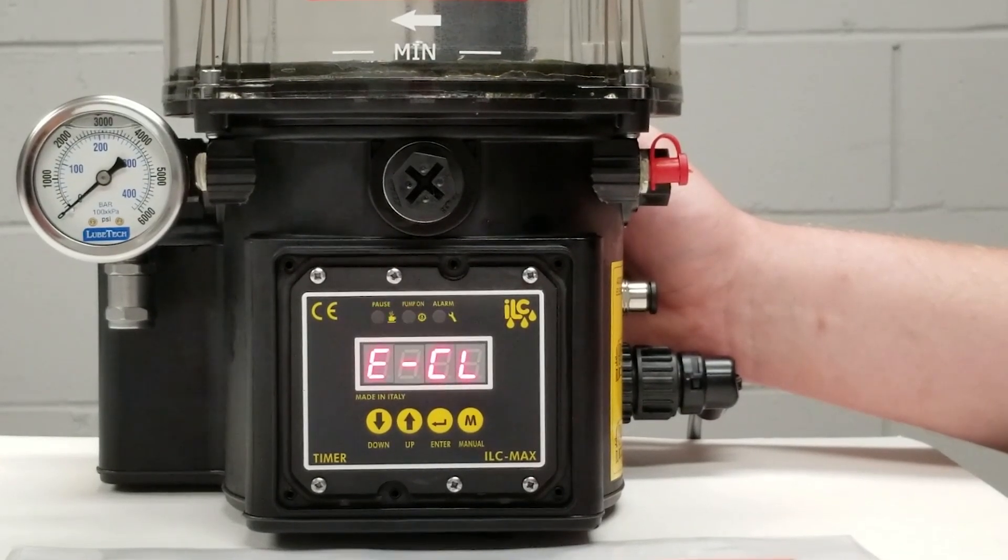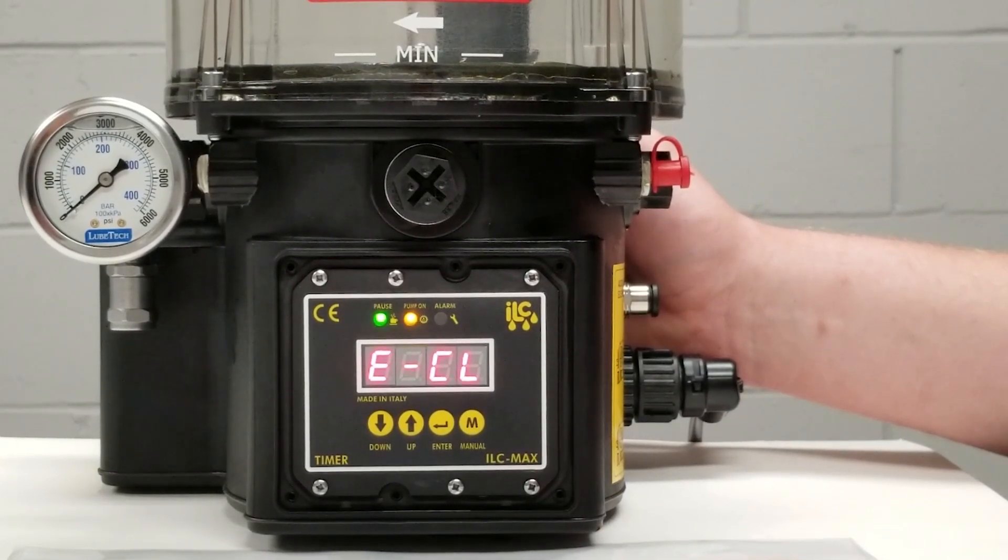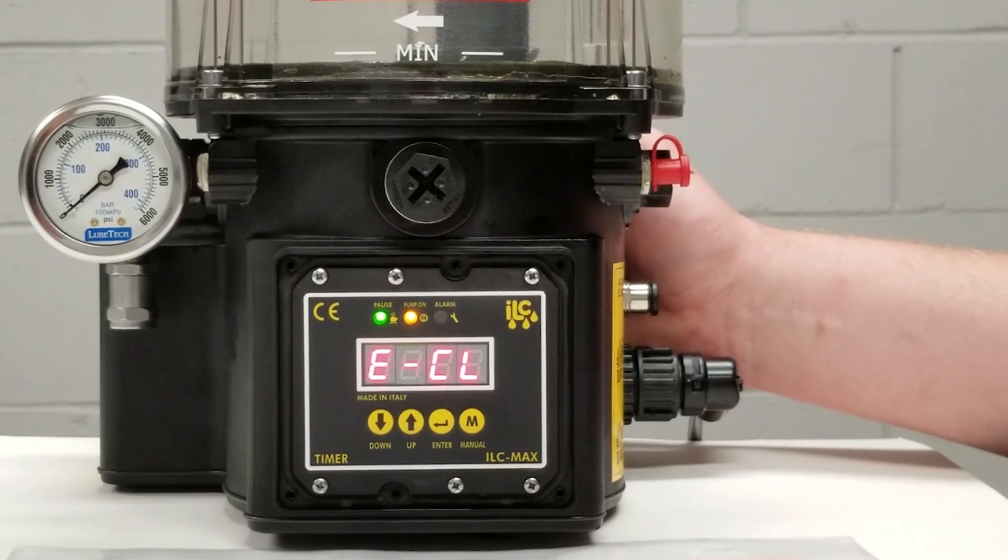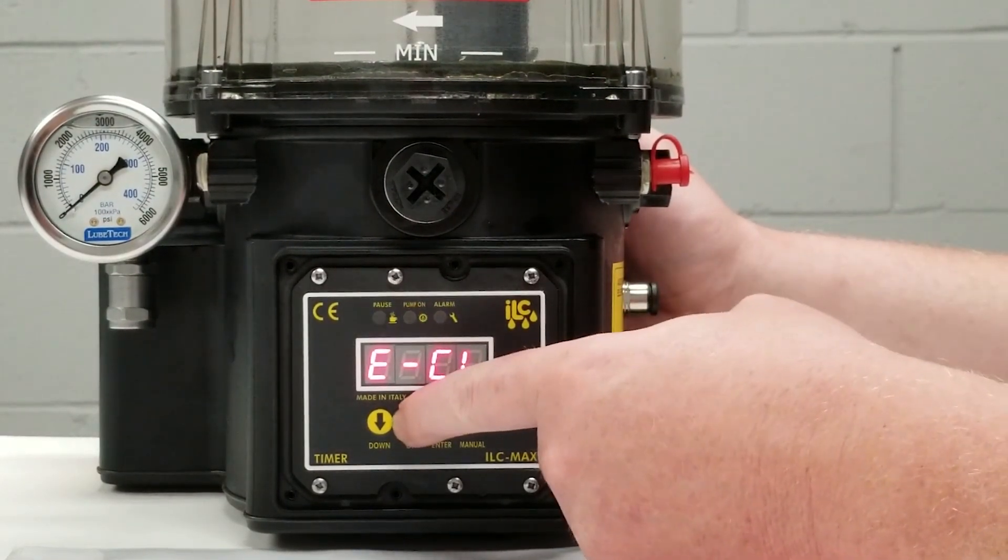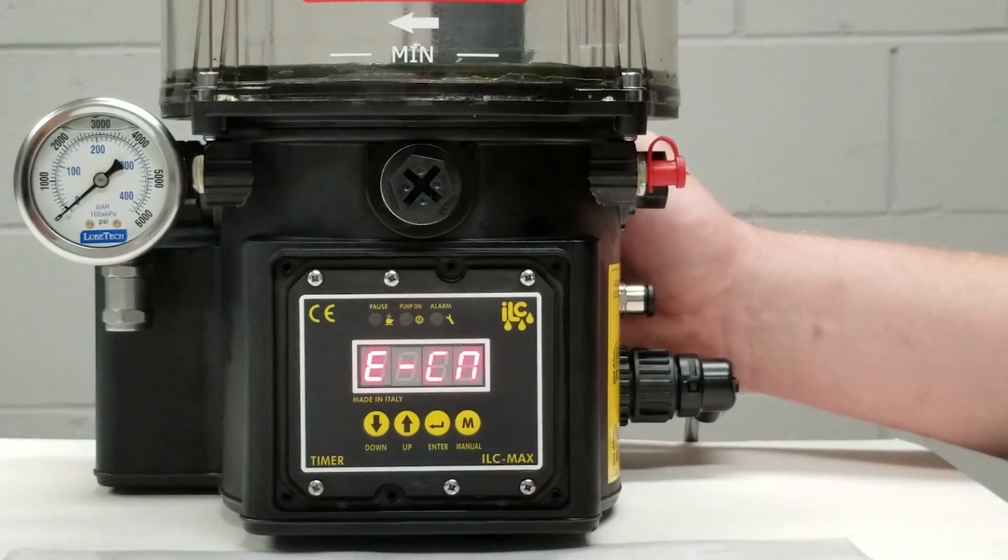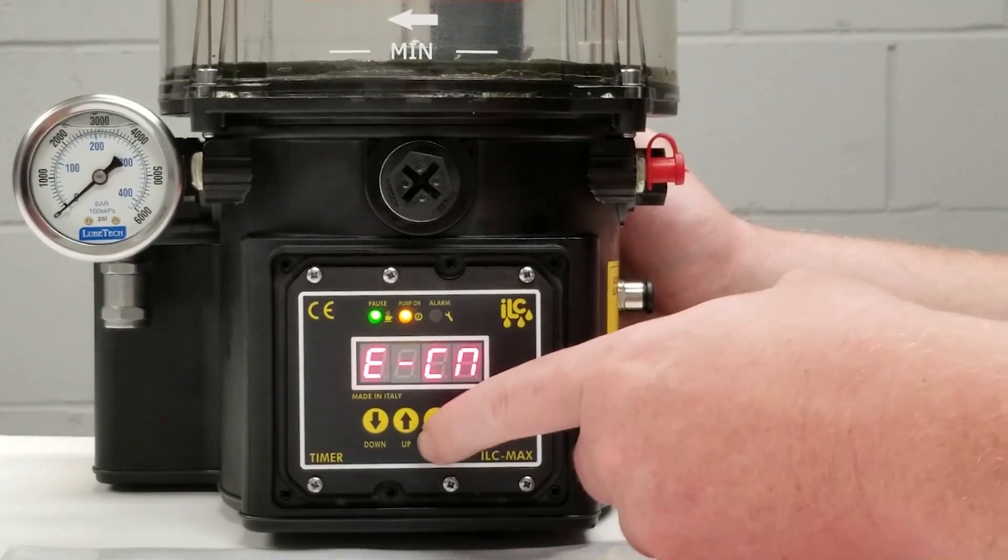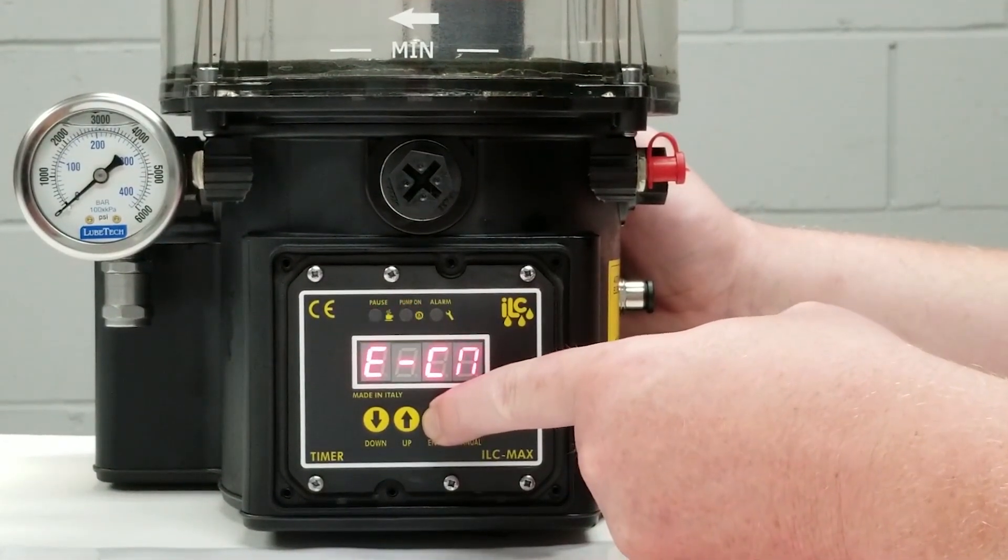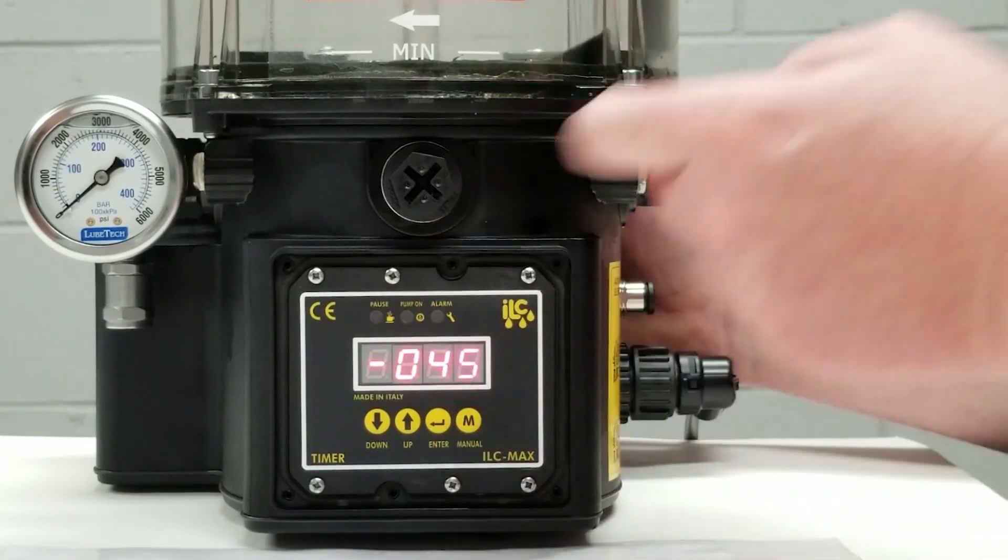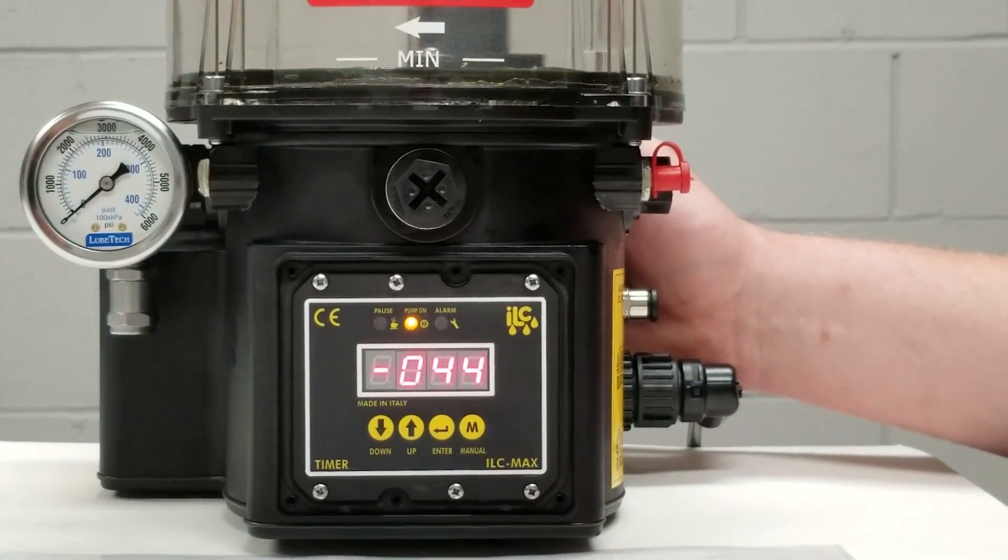So we've got an eight minute delay time and a 45 rotation count time set. What we need to do is press the up button again and this brings us back to our original E-CN. Here we're going to simply press and hold the enter key again for three seconds. This forces our new codes into the pump.